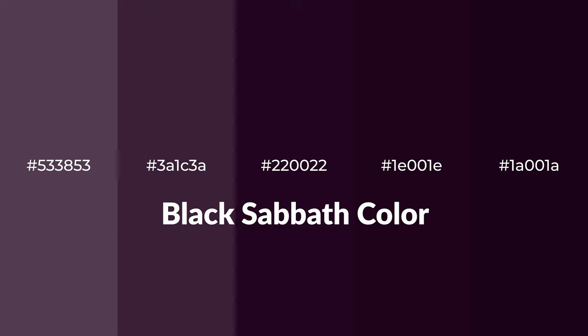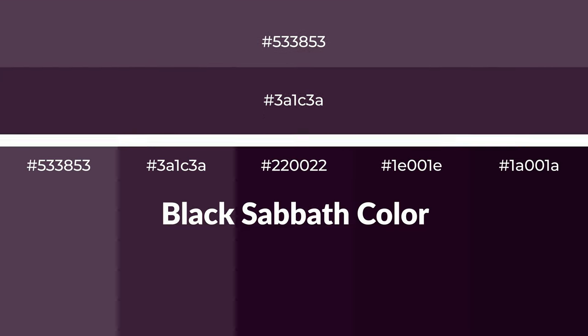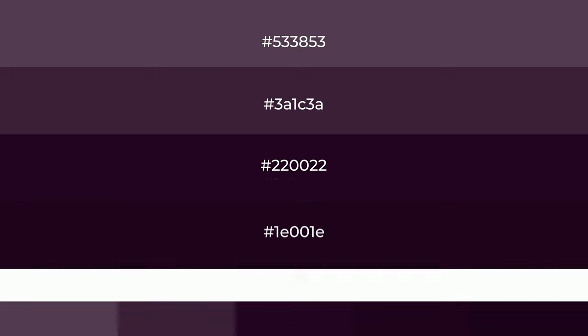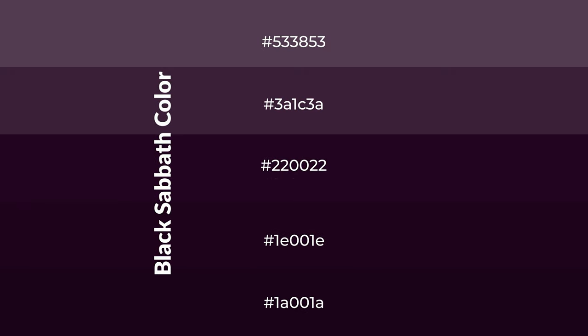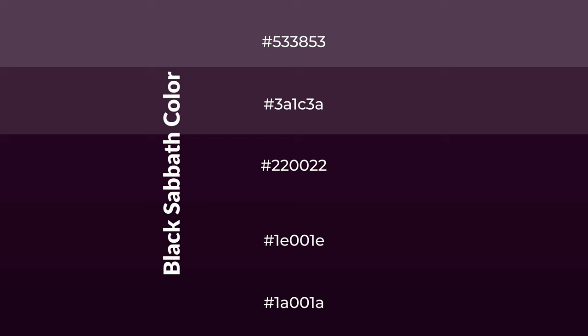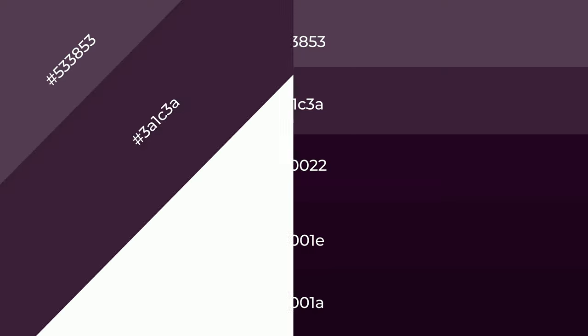Warm shades of Black Sabbath color with violet hue for your next project. To generate tints of a color, we add white to the color. Tints create light and exquisite emotions. To generate shades of a color, we add black to the color, and it is used in patterns, 3D effects, and layers. Shades create depth and drama.